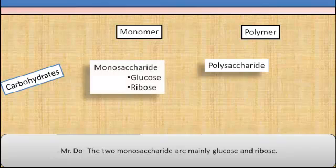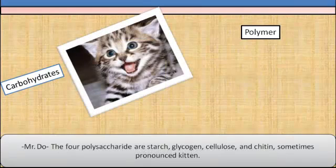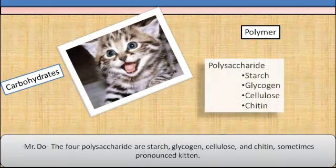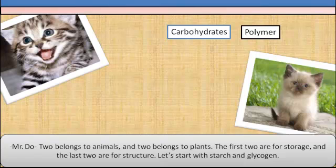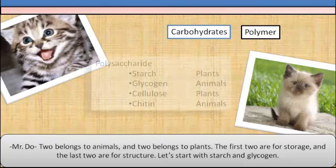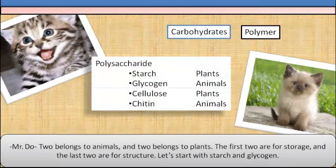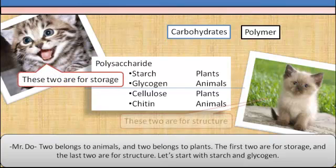The two main monosaccharides are glucose and ribose. The four polysaccharides are starch, glycogen, cellulose, and chitin — sometimes pronounced kitten. Two belong to animals and two belong to plants. The first two are for storage and the last two are for structure.